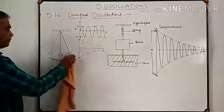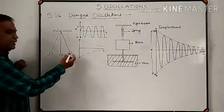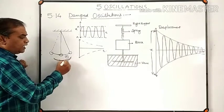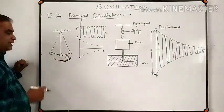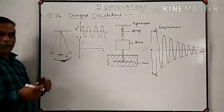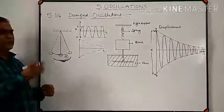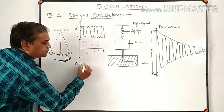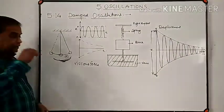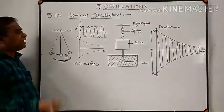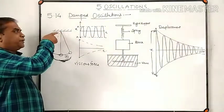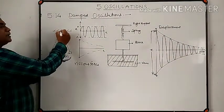But in actual practice, whenever a pendulum is released from its extreme position, as time goes on, the amplitude of oscillation decreases and finally becomes zero — the pendulum dies out. This happens because the bob of the pendulum is acted upon by viscous force exerted by the surrounding air, and some frictional forces are produced at the point of contact.